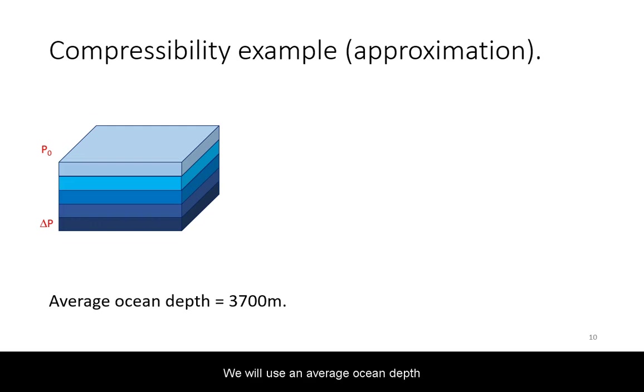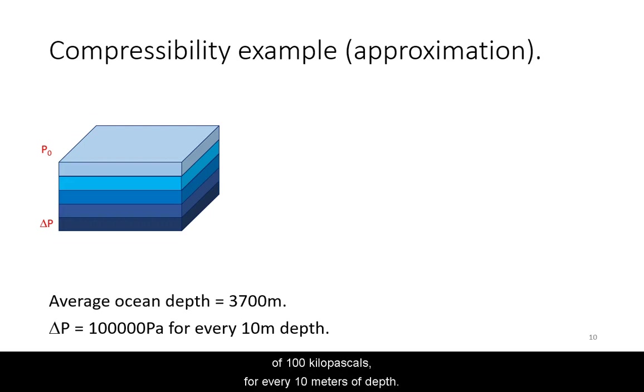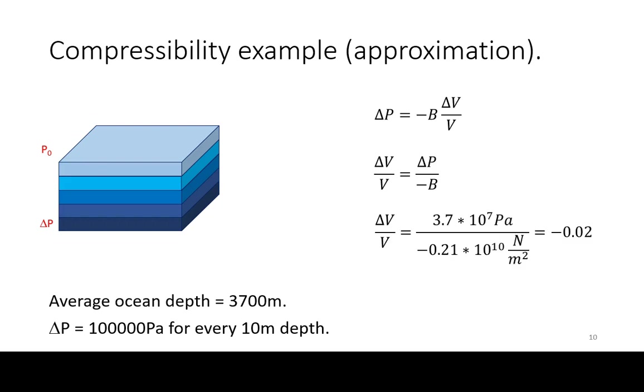How dense is water at the bottom of the ocean? We will use an average ocean depth of 3.7 kilometers. We will use the approximate change in pressure of 100 kilopascals for every 10 meters of depth. Plugging this into our compressibility equation, we can find the proportional change in volume and hence density.